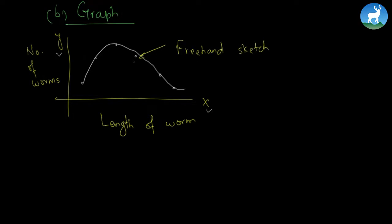When we are done we simply plot the dots and draw a smooth freehand drawing. The result is what we call the graph. This is a freehand sketch.